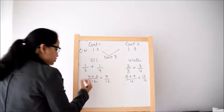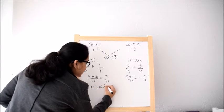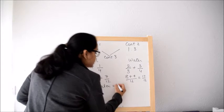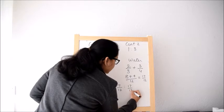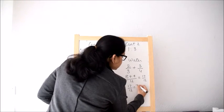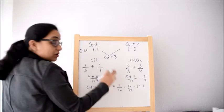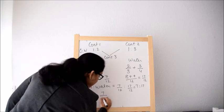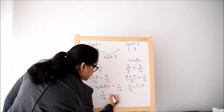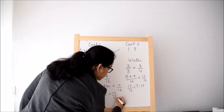So when we take the ratio, ratio of oil is to water in the third container, the ratio will be 7 by 12 is to 17 by 12 and the ratio is 7 is to 17. Now, how we will find 7 is to 17?